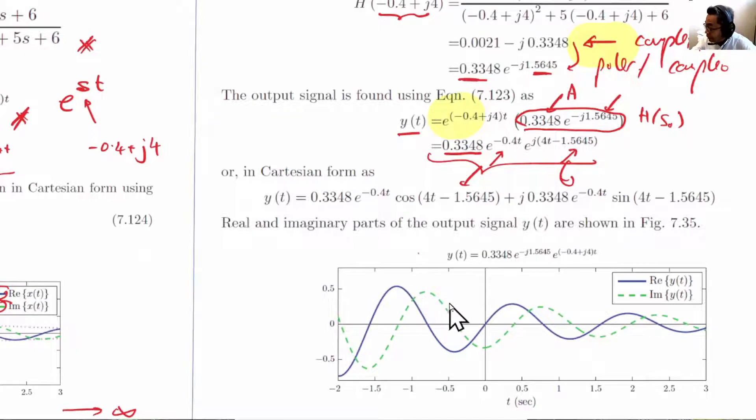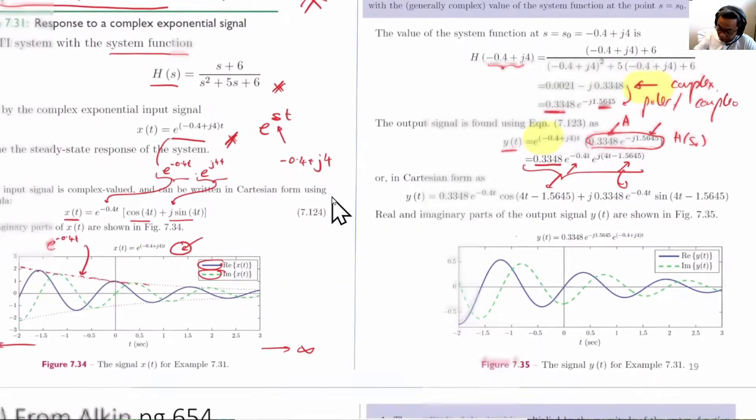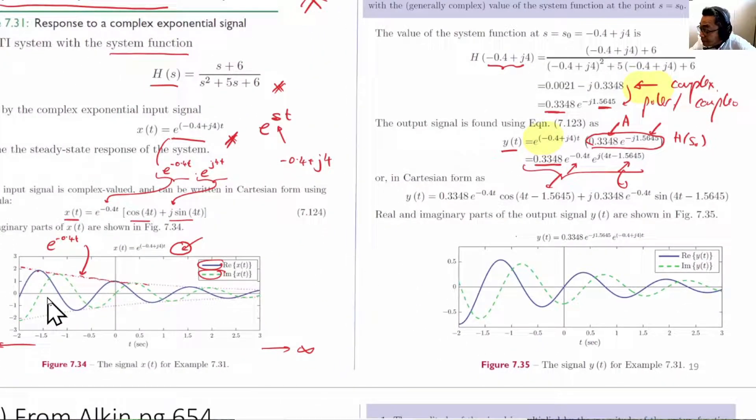The blue and the green are the real and imaginary parts of y(t). You can now compare this against this. And you will see that originally the input is about 1 at time 0. And now at time 0 it is 0. So there is a phase shift and it has become smaller.